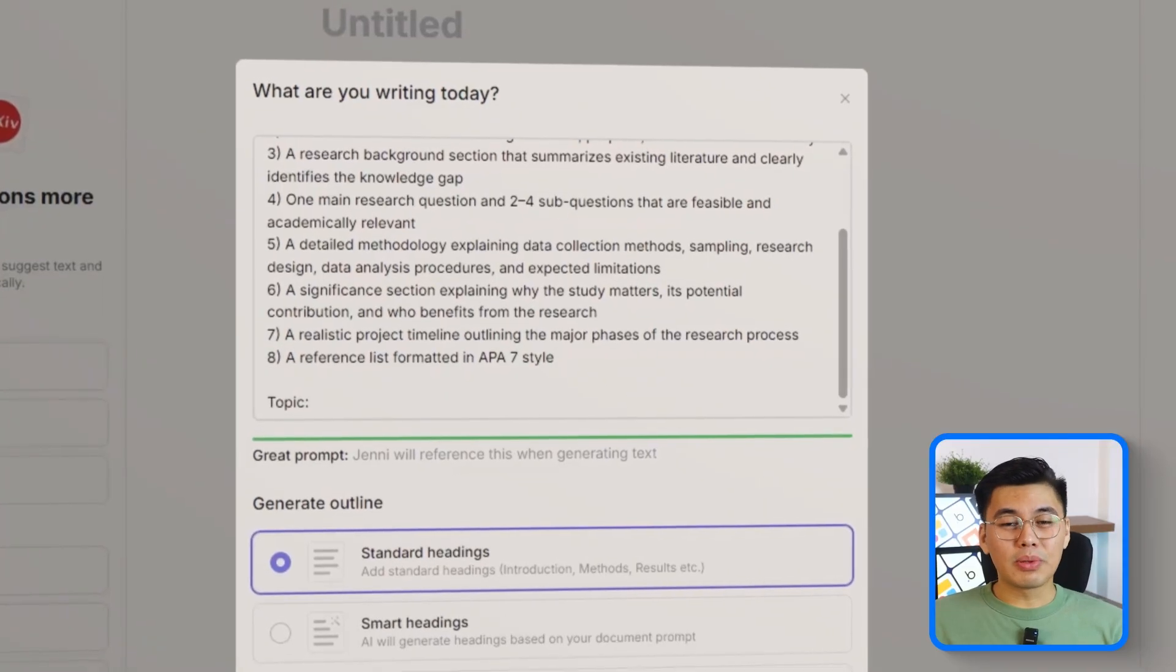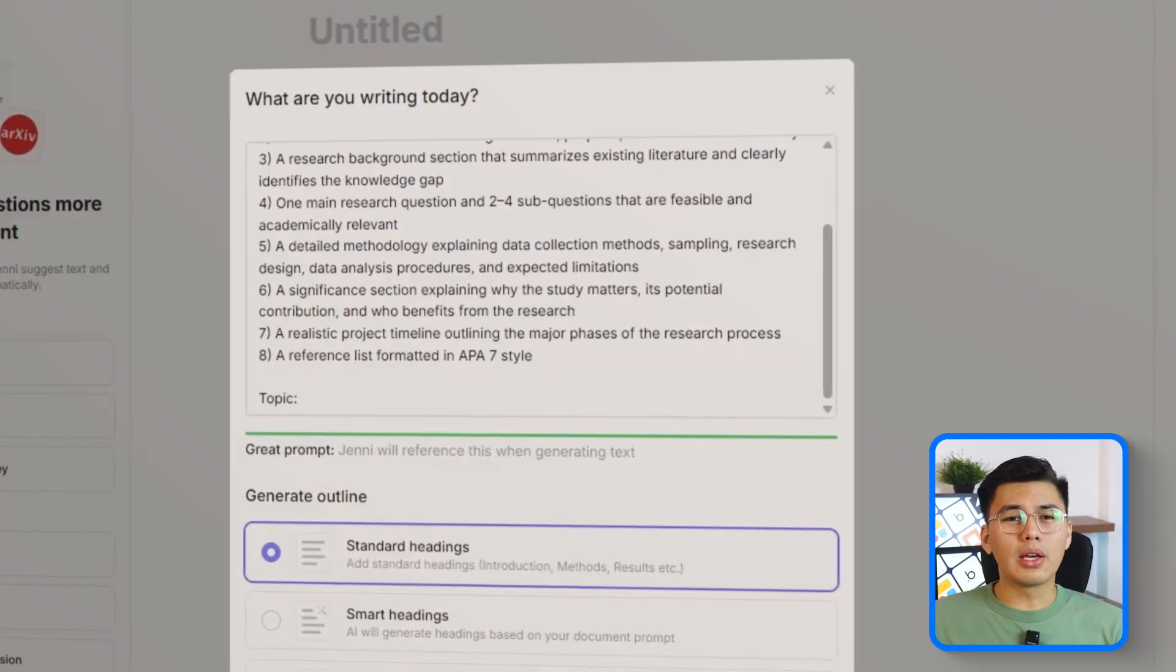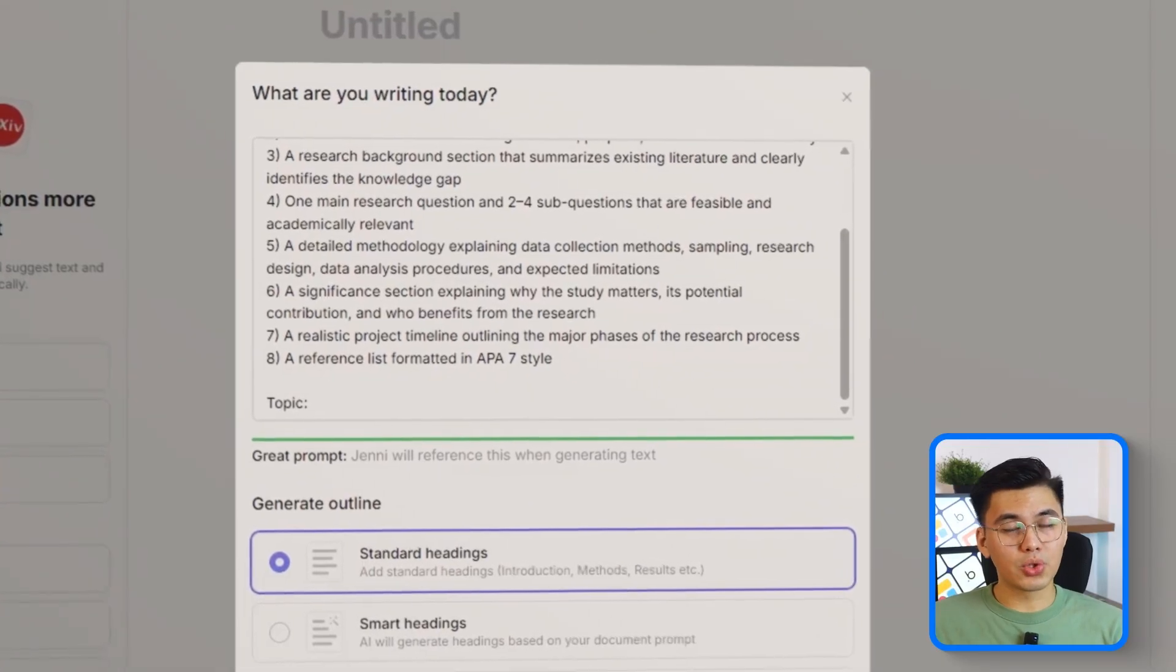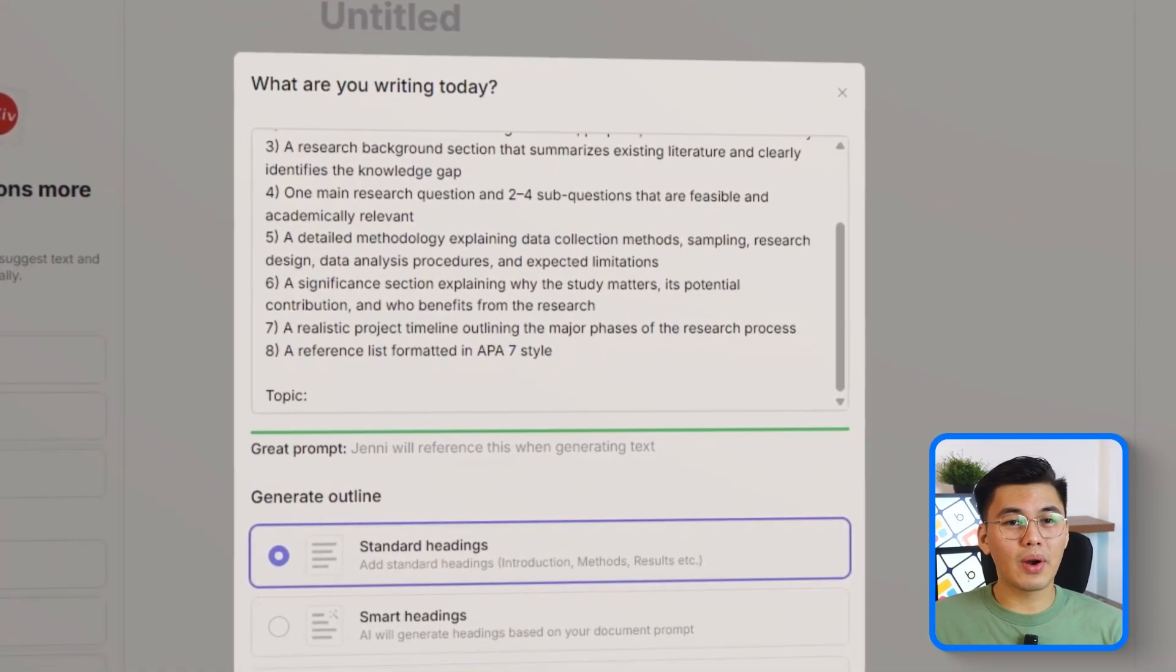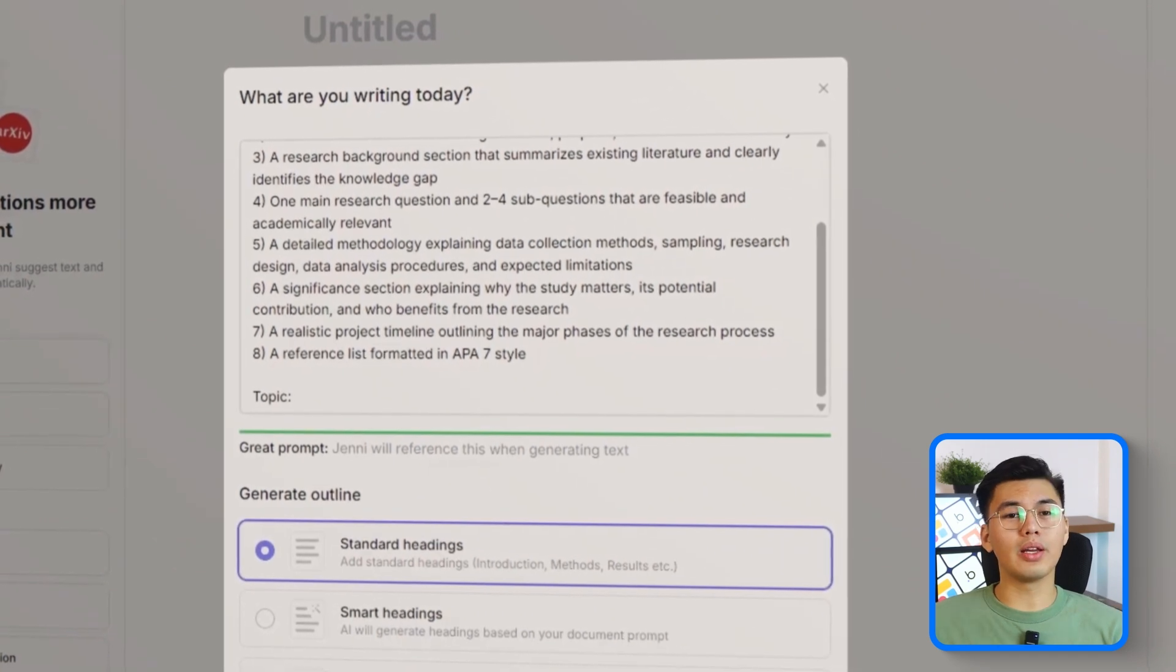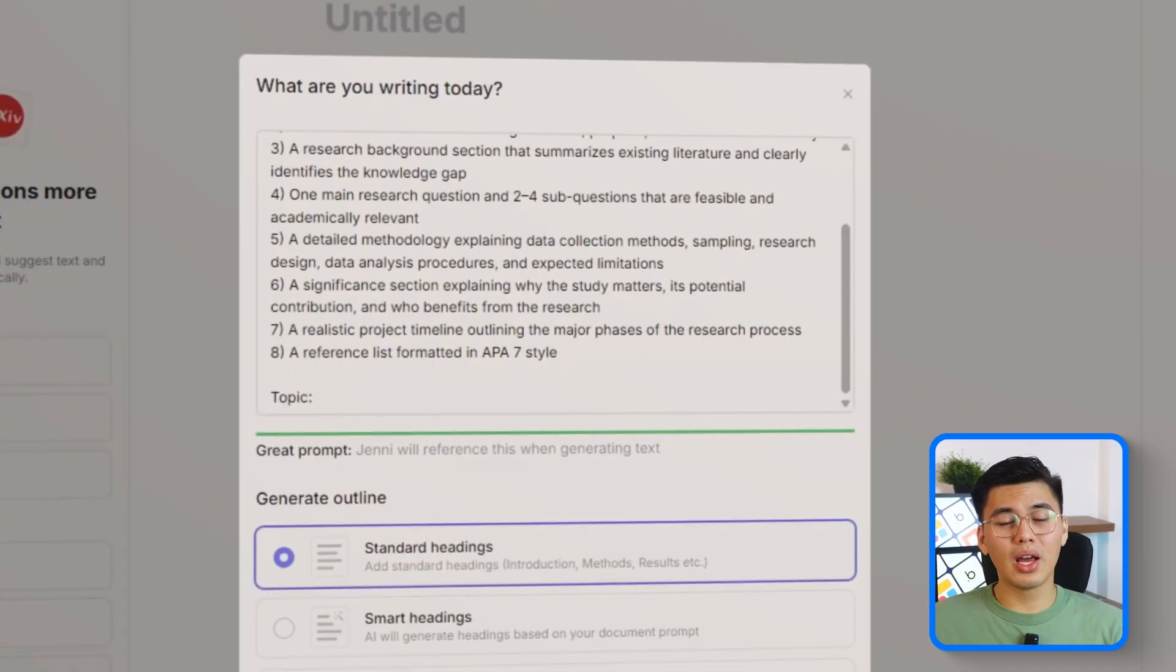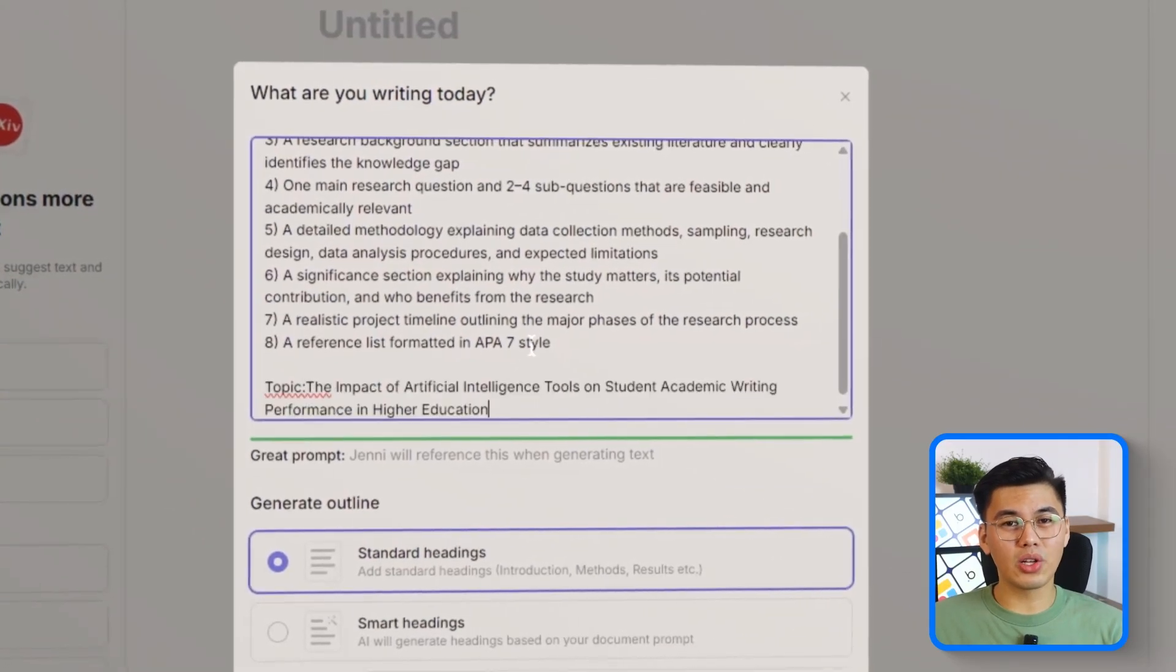Create a complete academic research proposal that includes all eight standard sections. One, a clear, keyword-rich title. Two, a 100-word abstract summarizing the issue, purpose, and direction of the study. Three, a research background section that summarizes existing literature and clearly identifies the knowledge gap.